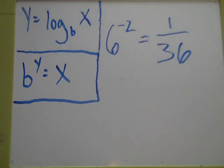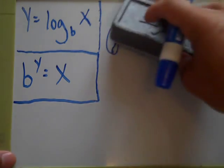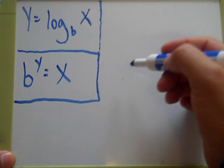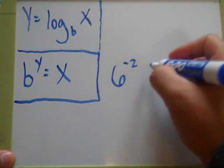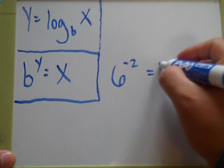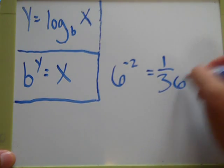You're basically going in the opposite direction. As a matter of fact, let me write it down here so it looks a little more in form. 6 to the negative 2 power equals 1 over 36.